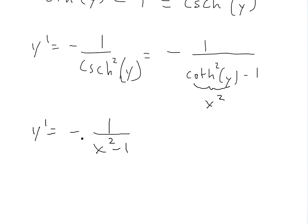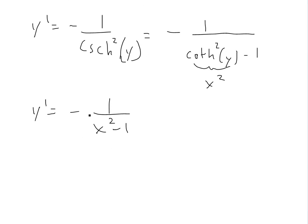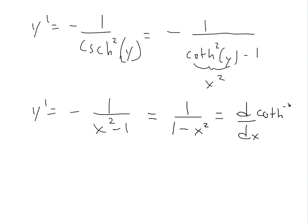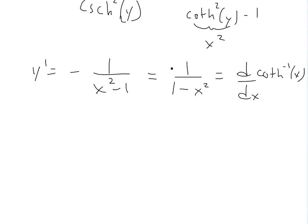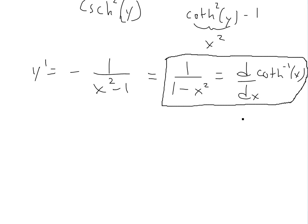We can move the negative inside, flipping the sign of the denominator, so we get y prime equals 1 over 1 minus x squared. This is the same as the derivative of the inverse hyperbolic cotangent of x. And there's our proof — pretty straightforward.